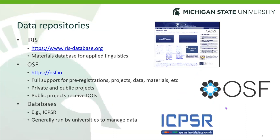There are many data repositories you could use in your open science practices. One of the most well-known ones is IRIS, which is run by applied linguists in our field. It is a repository for materials — a collection of instruments used in studies, surveys, and tests that have been used — and they're all freely available. They do come with a stable URL, though it doesn't come with a DOI. It's quite helpful for people designing studies so they don't have to design their instruments from the ground up.